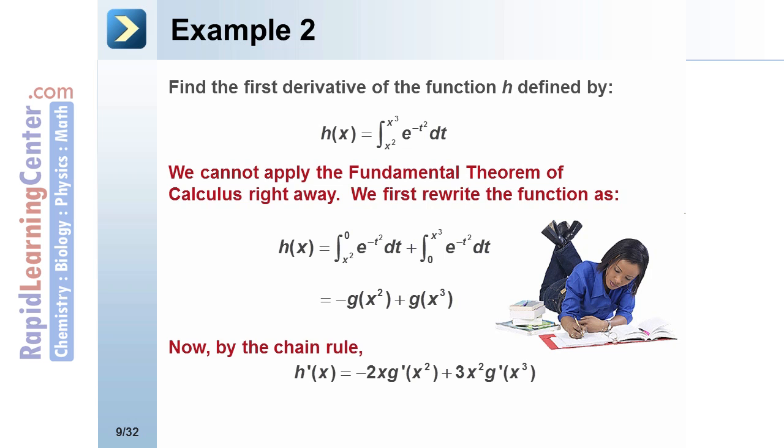Now by the chain rule, we have that h prime of x equals negative 2x g prime of x squared plus 3x squared g prime of x cubed, which equals negative 2x e to the negative x to the fourth plus 3x squared e to the negative x to the sixth.